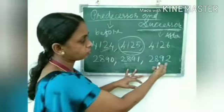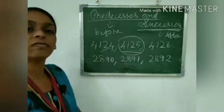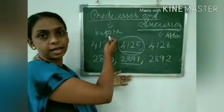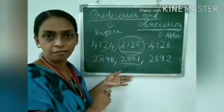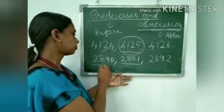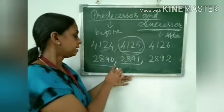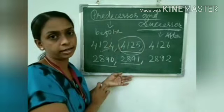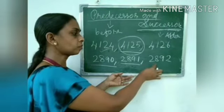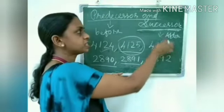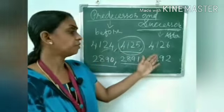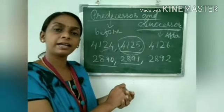Let us look at another example. Take the numbers 2890, 2891, and 2892. Predecessor is the before number and successor is the after number. So the predecessor of 2891 is 2890, and the successor of 2891 is 2892.